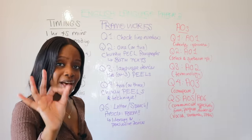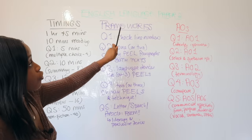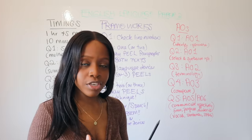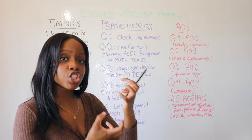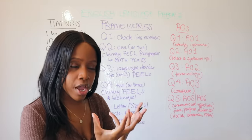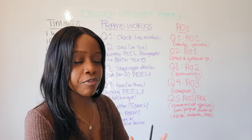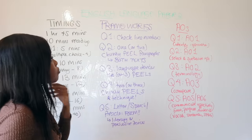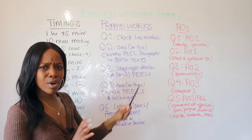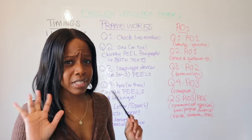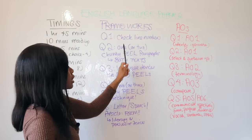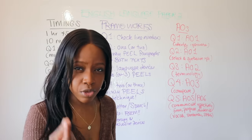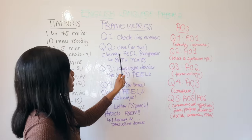Now let's talk about frameworks for all five questions — this is a general overview of the paper in a nutshell. Question One is really straightforward: it's a multiple choice question, so just select the information from the correct line numbers given. It shouldn't stress you out.